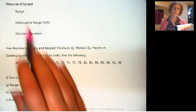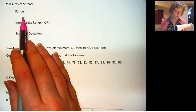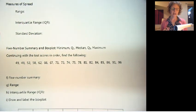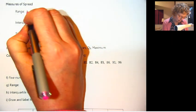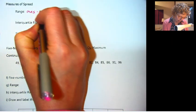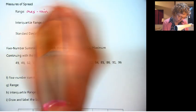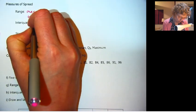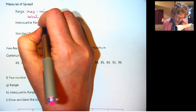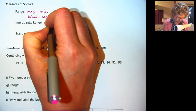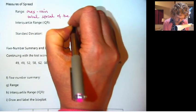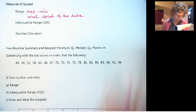Let's just talk about what each of these are. The range is the total width of the data, so it's the max minus the min, the total range or spread of the data.